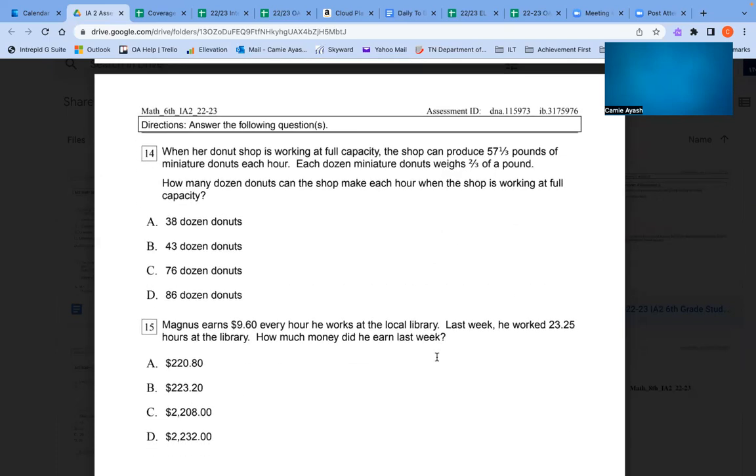Number 14: When her donut shop is working at full capacity, the shop can produce 57 and 1/3 pounds of miniature donuts each hour. Each dozen miniature donuts weigh 2/3 of a pound. How many dozen donuts can the shop make each hour when the shop is working at full capacity? A. 38 dozen donuts. B. 43 dozen donuts. C. 76 dozen donuts. D. 86 dozen donuts.